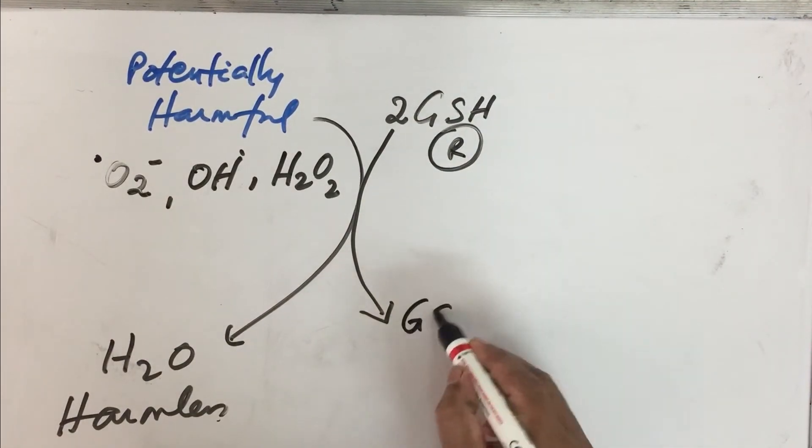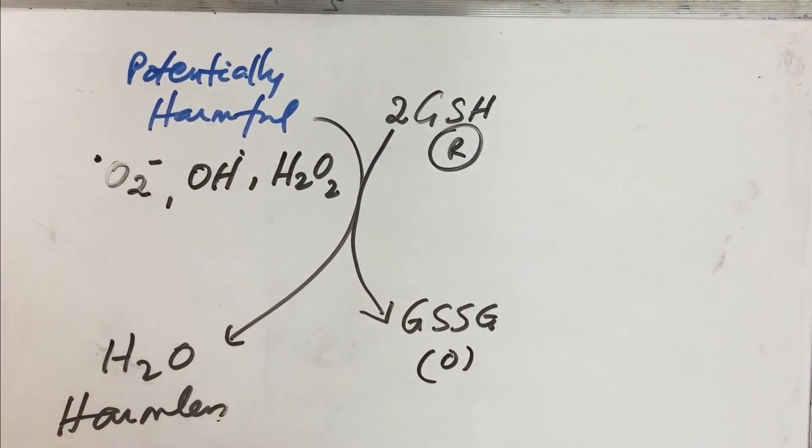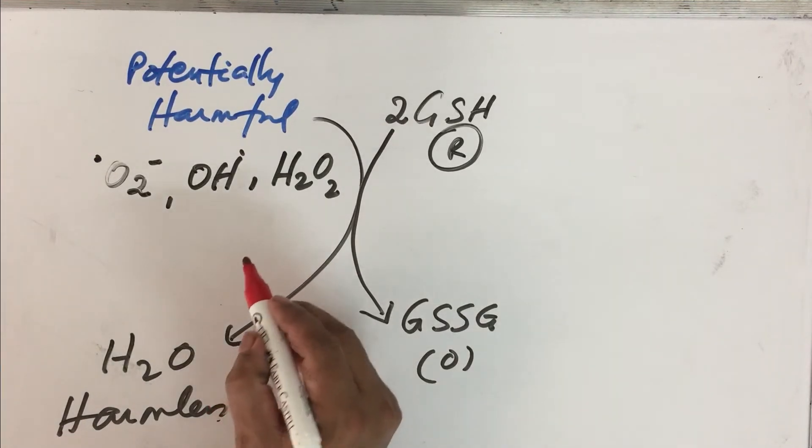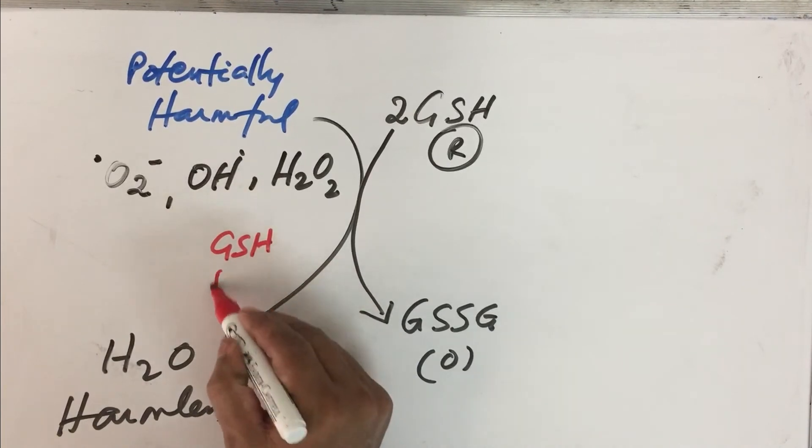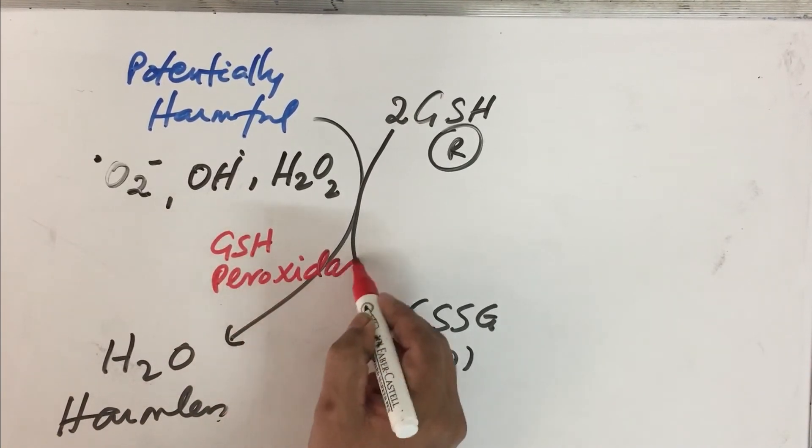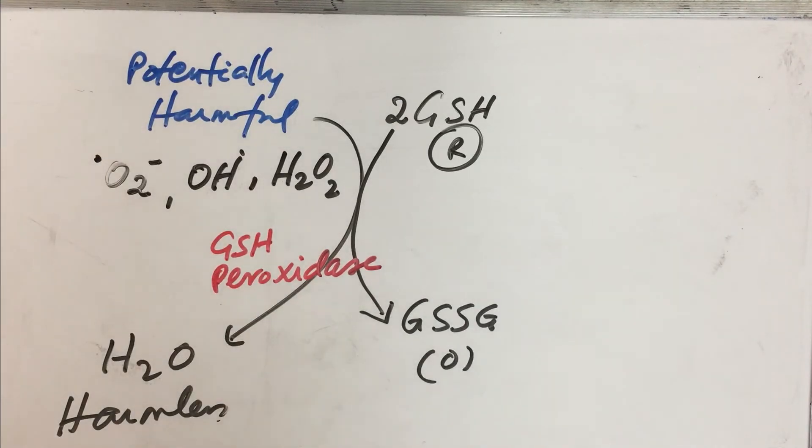This reaction is catalyzed by a very interesting enzyme with a scavenger role, glutathione peroxidase. Glutathione peroxidase is one enzyme that has been identified using selenium as the cofactor. What is important for us is the oxidized form of glutathione is formed. A level of glutathione is very important for maintaining cell integrity, so all these are converted to the harmless form.